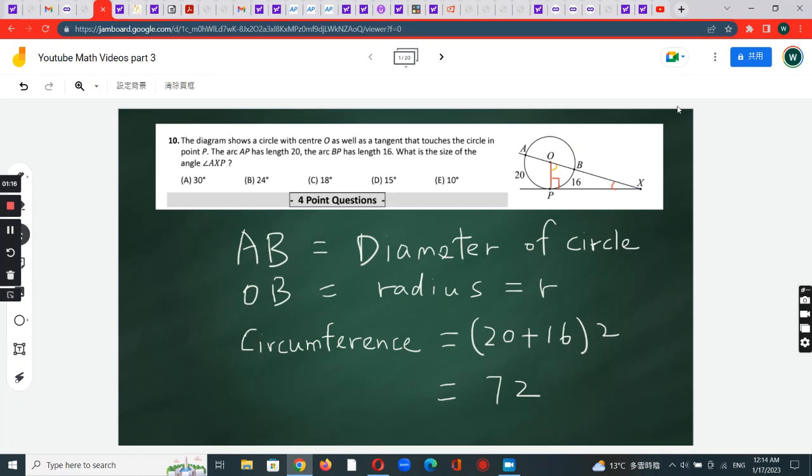The arc BP has length 16, the arc AP has length 20, and the question wants to know what is angle AXP. They are interested in this angle AXP.